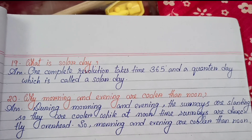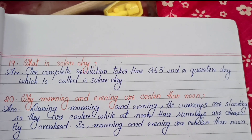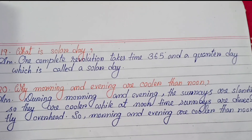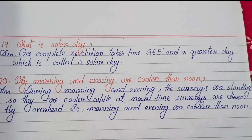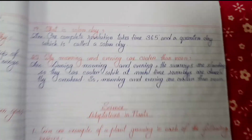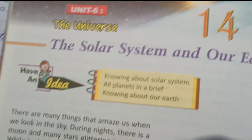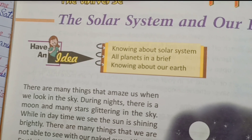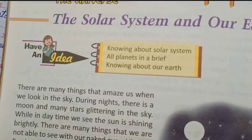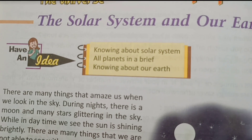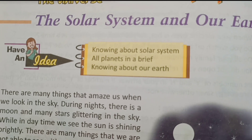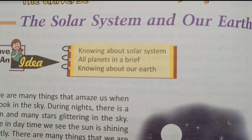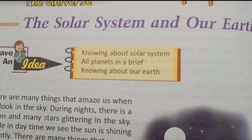Number twenty: Why are morning and evening cooler than noon? During morning and evening the sun's rays are slanting, so they are cooler, while at noon the sun's rays are directly overhead. That is why morning and evening are cooler than noon. We have come to the end — please like the video, subscribe the channel, and press the bell icon. We'll be back with a new video. Till then, take care and study well. Bye.